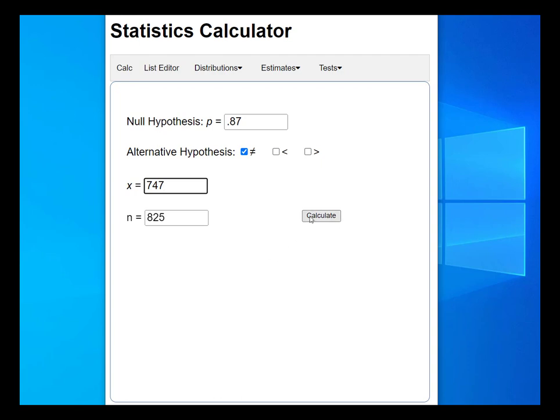When you press Calculate, it will come up with the output here. It comes up with a few different things. p̂ (p hat) is the first one, and that's literally just if you had taken 747 divided by 825—that gives you the value of p̂.